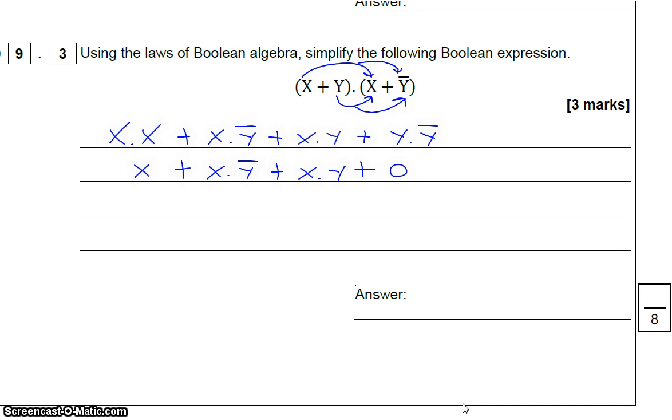Now let's look at this in parts. We could look at just this section, and there is a rule that says A or A and B just equals A, which means X or X and not Y just equals X. So we've got X or X and Y. We've got rid of the zero now, and again we've got this same rule applying there. So this means that the answer is X.